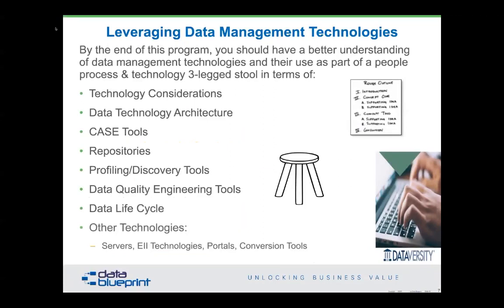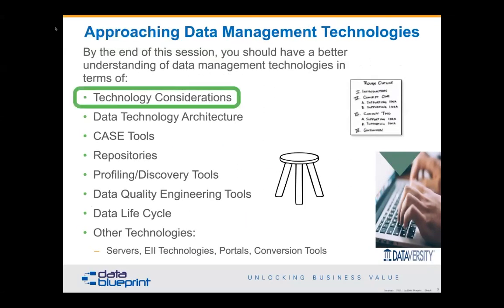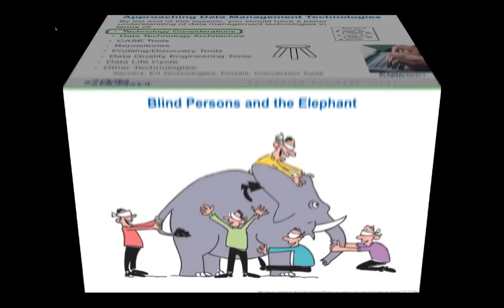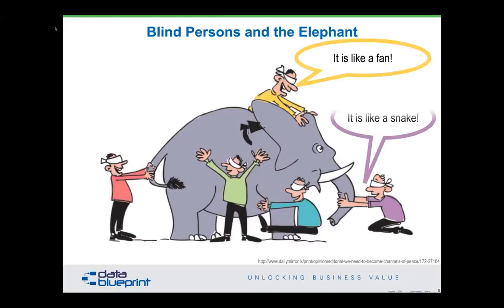Let's take a look at some technology considerations. The most important thing to keep in mind is that even people who've been in data for a while tend to know only one part of data — like the blind persons and the elephant. Somebody feeling the ear says the elephant is like a fan, somebody feeling the trunk says it's like a snake, somebody with the leg says it's like a tree, somebody with the tail says it's a rope, and if you're up against the side, it's like a wall. All of them are correct from their perspective, but data management is an amorphous subject.